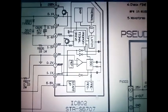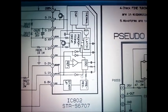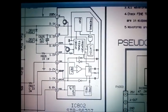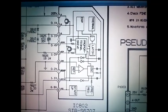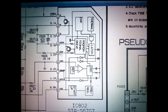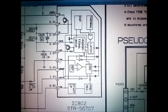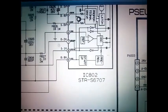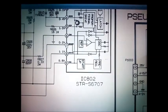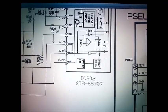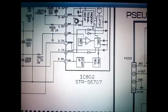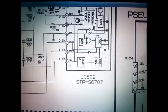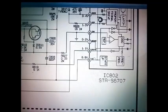STR S6707. Pin 1 is 295V, pin 2 is 0.1V, pin 3 is 0.4V, pin 6 is ground, pin 7 is 0.2V, pin 8 is 1.1V.